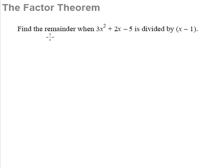Let's take a look at this short little example here. Find the remainder when 3x squared plus 2x minus 5 is divided by x minus 1. So according to the remainder theorem that we have learned, we let f(x) be equal to 3x squared plus 2x minus 5. To find the remainder when it is divided by x minus 1, we simply substitute in x equals 1 and we have 3 plus 2 minus 5 and that will give us 0.